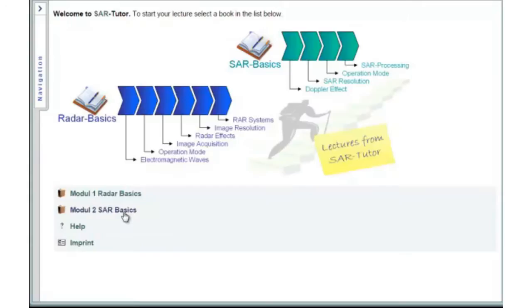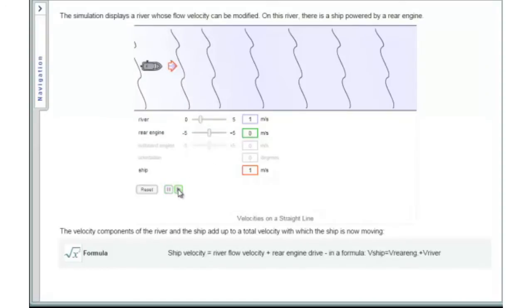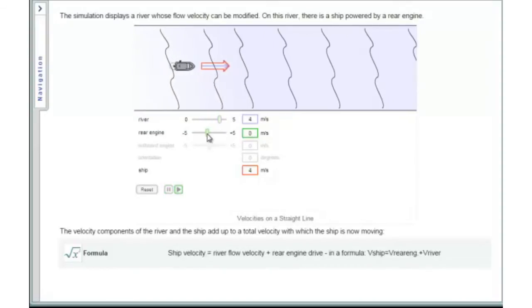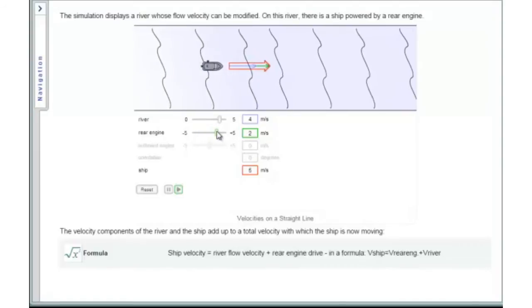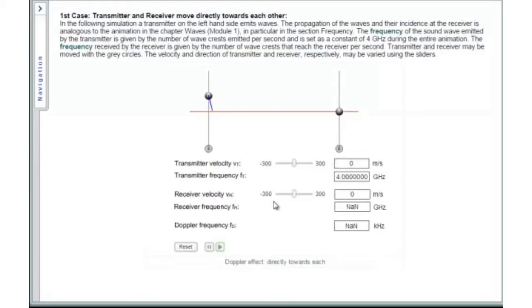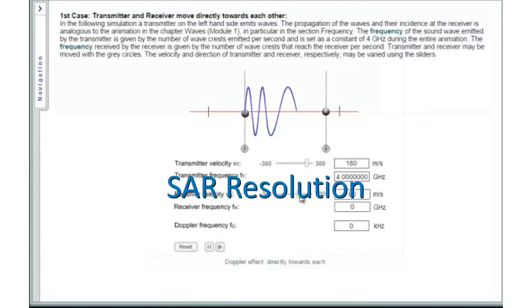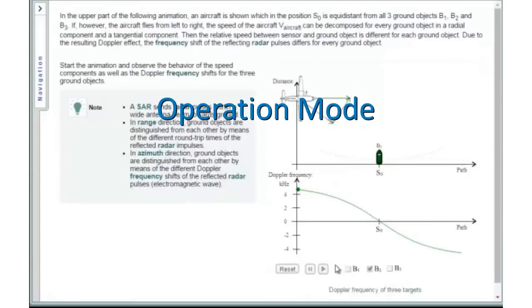SAR Basics: This e-learning module includes four e-learning sets, starting with the SAR principles around the Doppler effect and guiding right up to the procedures of SAR image interpretation and object-oriented interpretation. The modules of this second e-learning course are the Doppler effect, SAR resolution, operating mode and SAR processing.